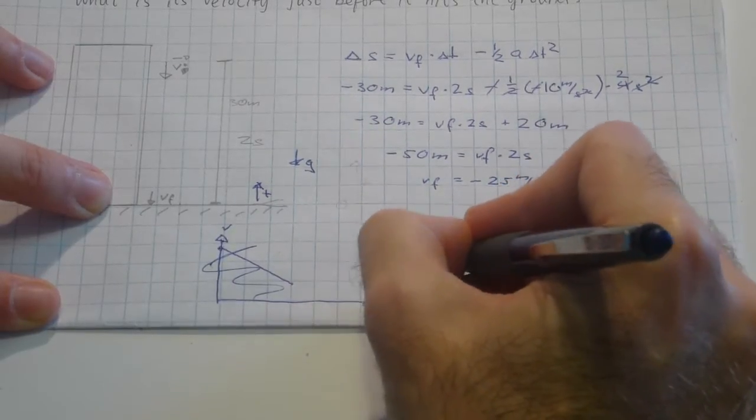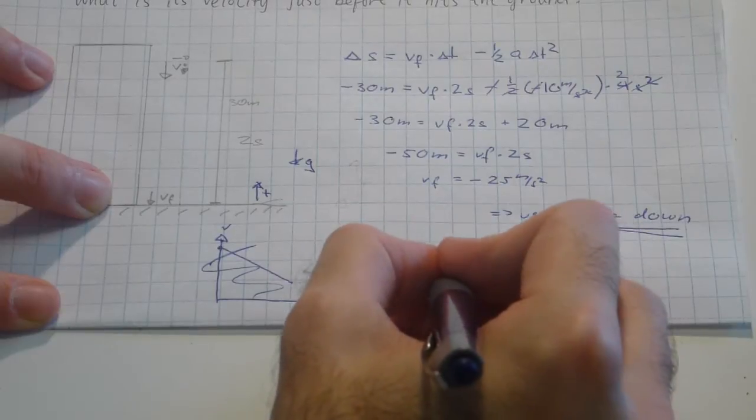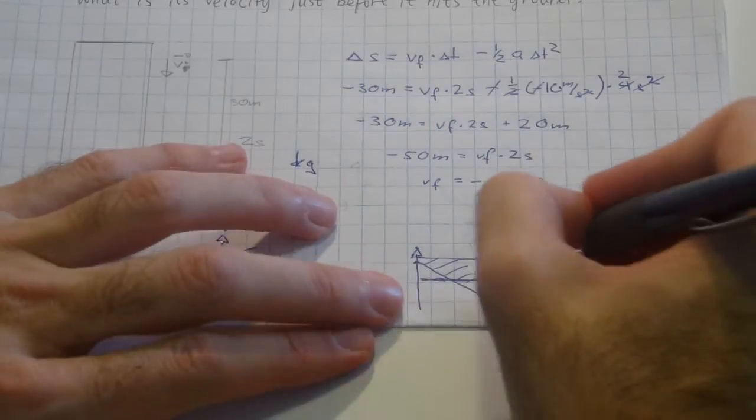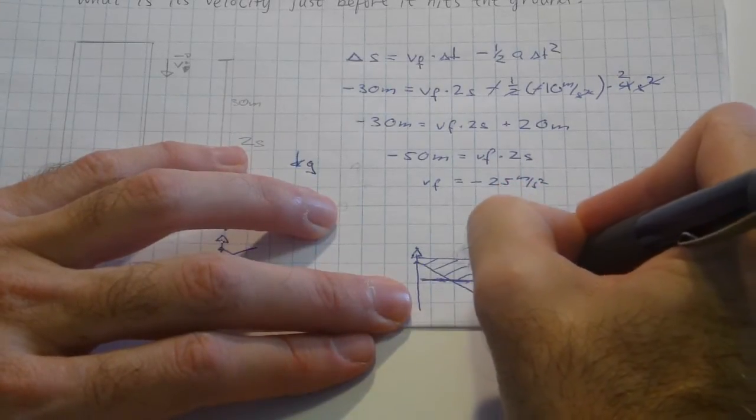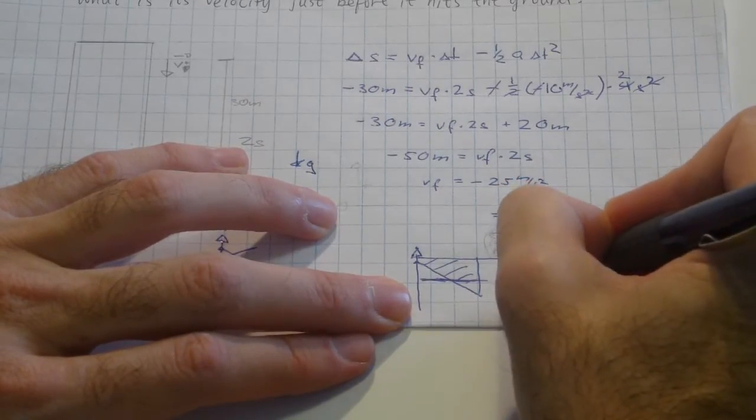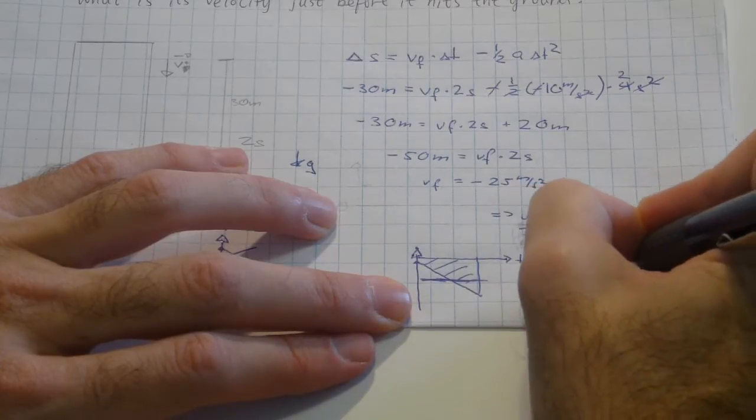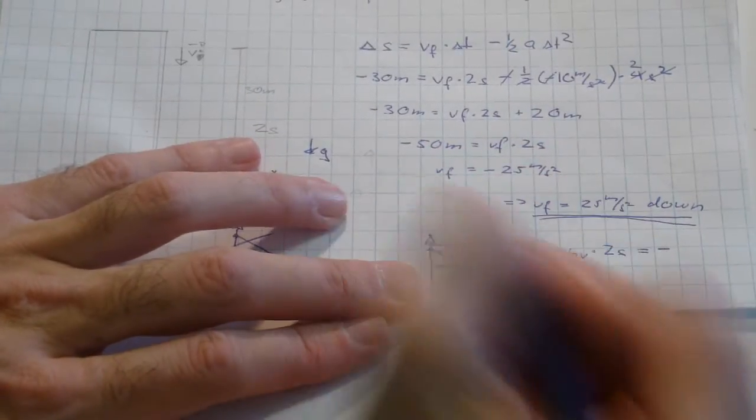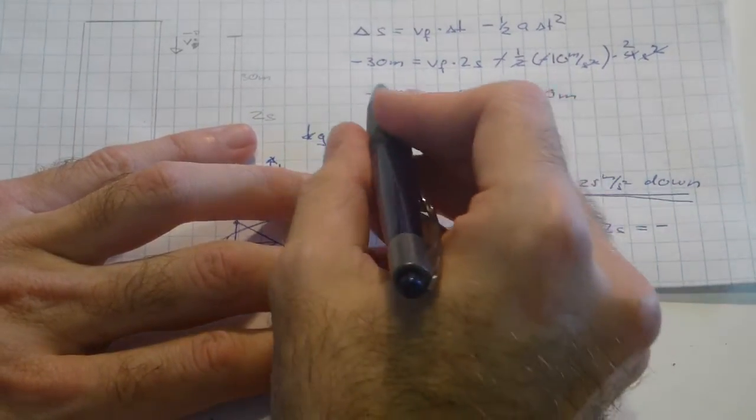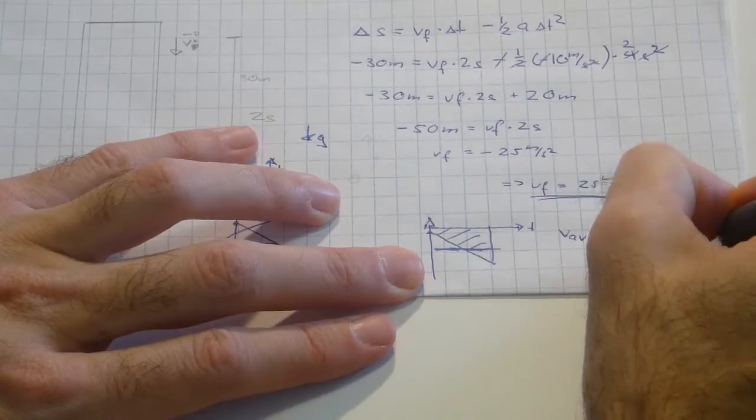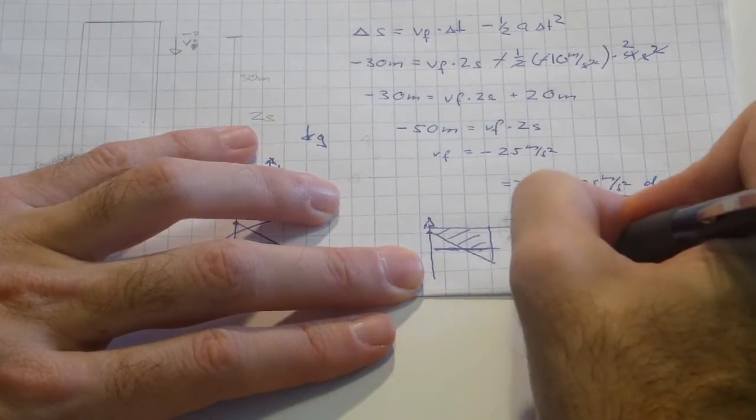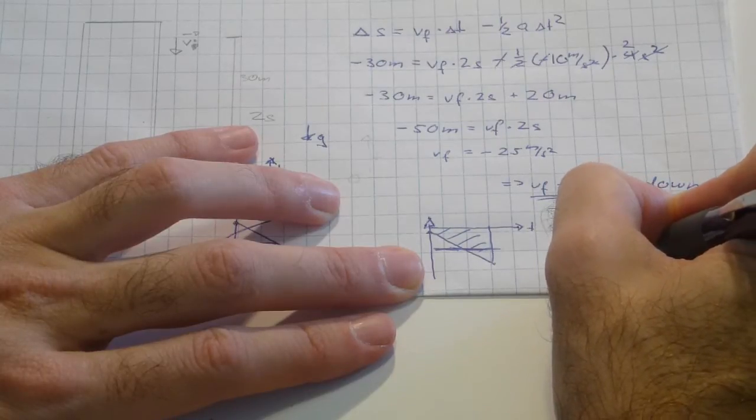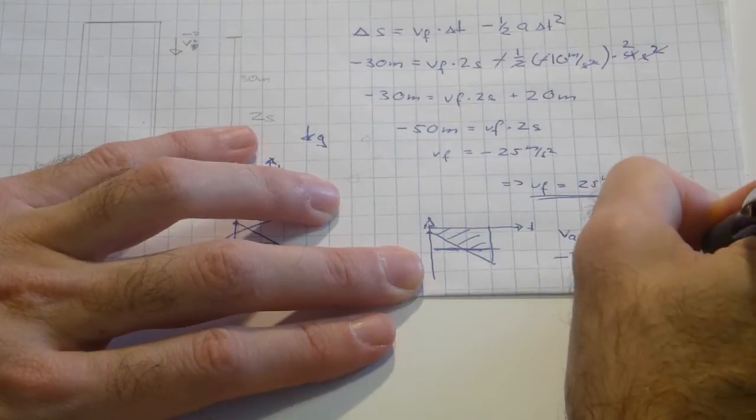The change in position would be my area, which is my average velocity. Therefore, I could say v-average times my change in time, 2 seconds, must be my change in position, which is minus 30 meters. Therefore, I know that my v-average is minus 15 meters per second.